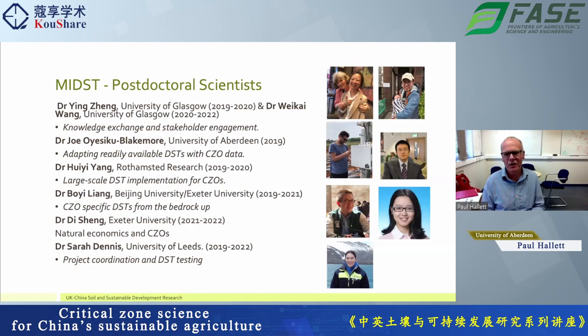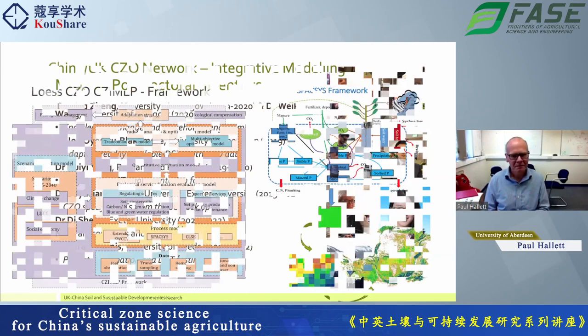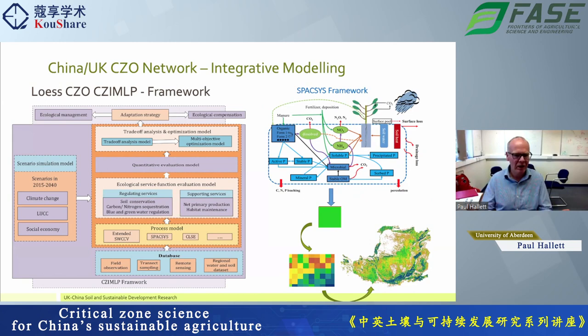We brought in environmental modelers and kept the same coordinators from the original project, and also brought in experts in social sciences and economics. In the first project, the Loess Plateau team came up with a model which integrated a lot of the science we were exploring as a way to come up with extremely good regional-based policy decisions. But this is some way away from what a farmer could use out in the field, so there's still that disconnect between science and practice.